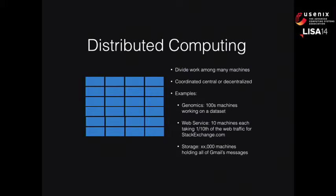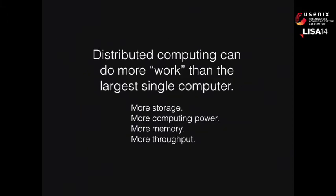Or web services — like George mentioned, we both work at Stack Exchange. We have about 10 machines that each take one-tenth of the web traffic. You can also distribute storage over many machines; Gmail has many thousands of machines that combine to store all of its email. The point is that distributed computing can do more work than the single largest computer. By definition, distributed computing will always be bigger than what a single computer can do — if a vendor beats you with one machine, you just get ten of them.